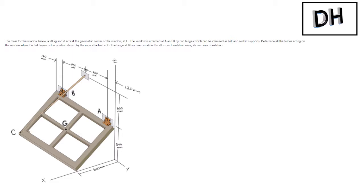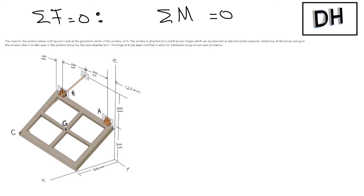We know we have to have equilibrium. Therefore, the sum of the forces acting on the system must equal to zero, and we know that the sum of the moments about the axes must also equal to zero — specifically about the x-axis rotation, the y-axis rotation, and about the z-axis. So all moments must equal zero. In this case, we have six equations of equilibrium, and we're going to use all of these as we solve the question.